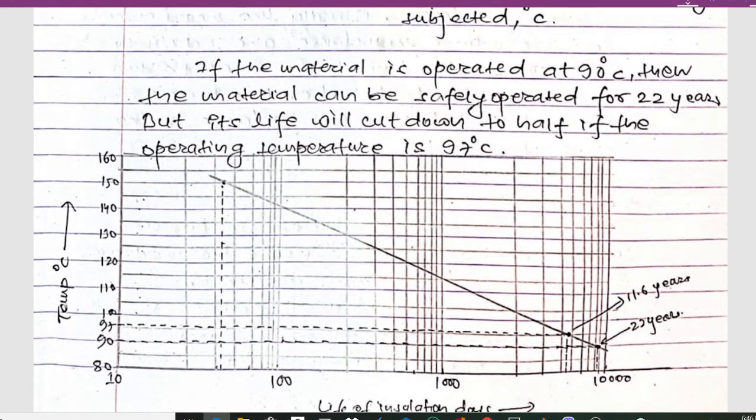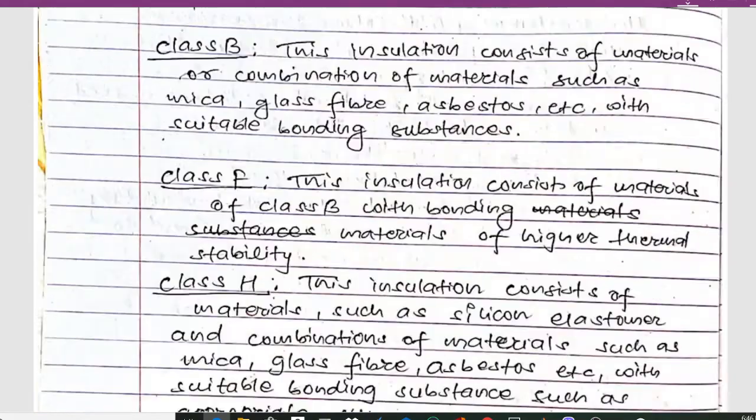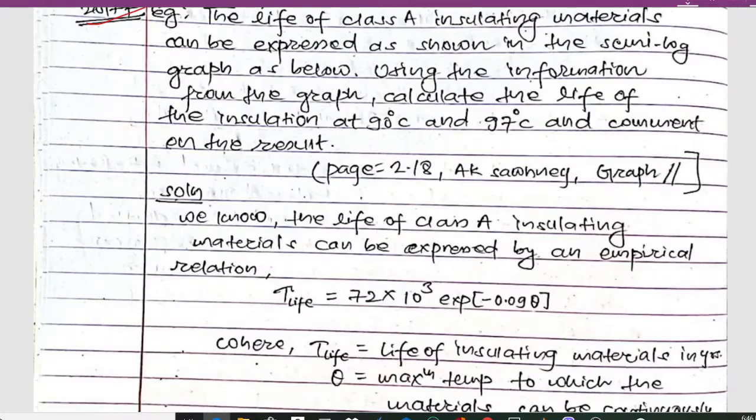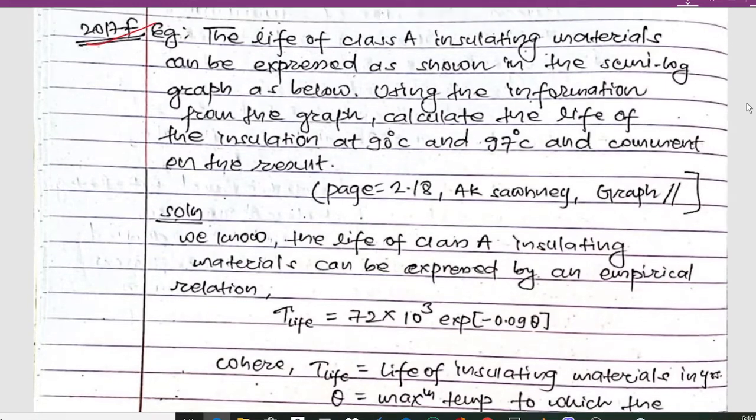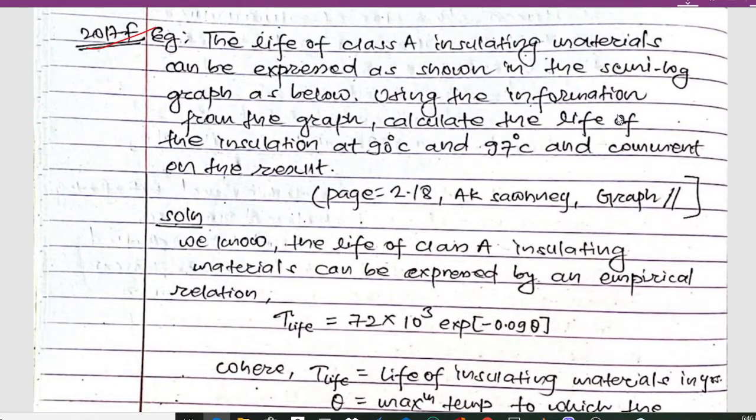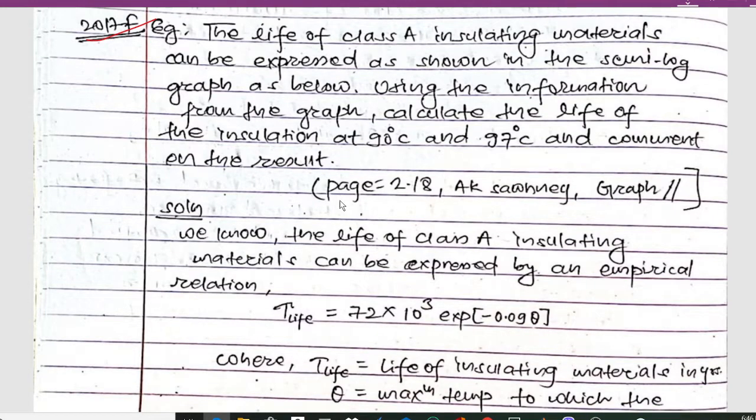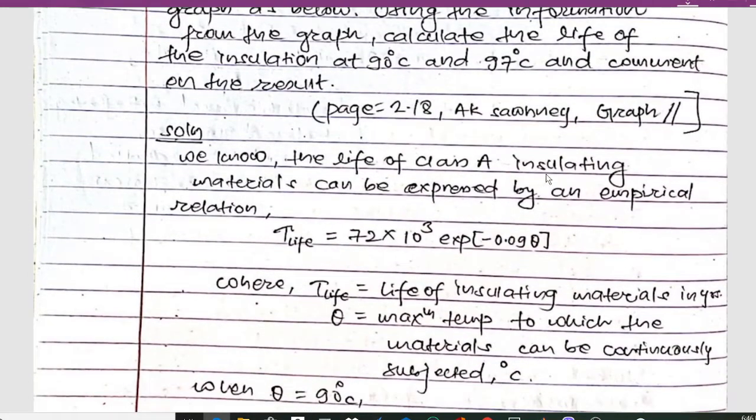Now let's see the solution. We have to calculate the life of insulation at 90 degrees Celsius and 97 degrees Celsius. The life of Class A insulating materials can be expressed by an empirical formula.